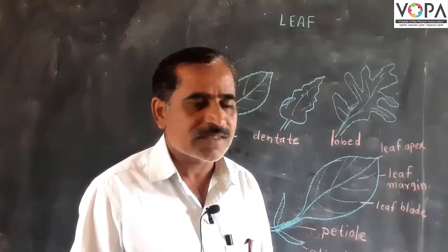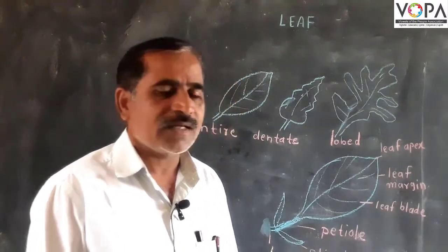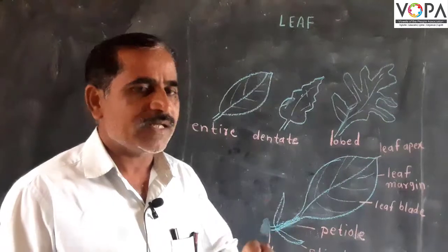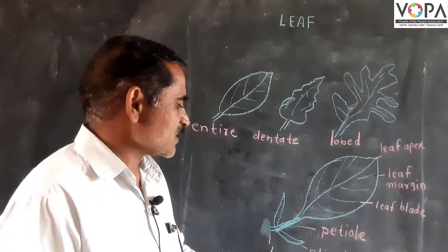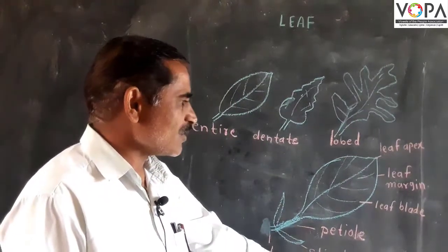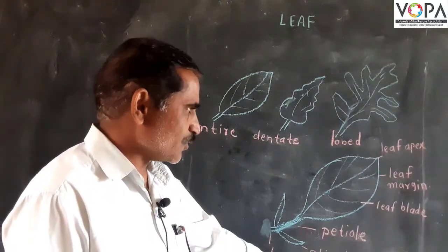Near the leaf base there are some leaf-like portions, and these are called stipules.